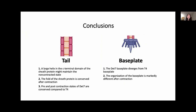In conclusion, key takeaways from our work include: a large helix in the C-terminal domain of the sheath protein may be maintaining the non-contracted state of DET7; the fold of the sheath protein is conserved after contraction; and the pre- and post-contraction states of DET7 are conserved compared to T4, suggesting that the contraction mechanism is conserved among myoviruses. Additionally, the DET7 base plate diverges from the T4 base plate, and the organization of the base plate is markedly different after contraction.